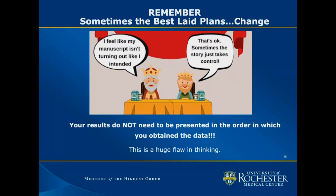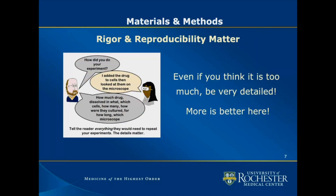Moving on from results, let's talk about materials and methods. They don't have to be written after the results — they can be written at any time, even continuously as you're doing experiments. What really matters is the level of detail. Rigor and reproducibility are incredibly important. You need to tell the reader everything they need to know to be able to repeat the experiment. If word count is a concern due to journal limits, it can be shortened or moved to a supplement, but it's better to be detailed upfront.